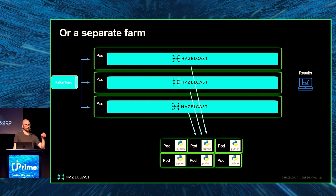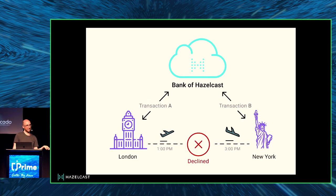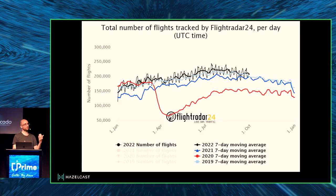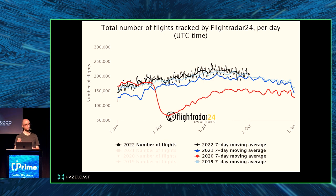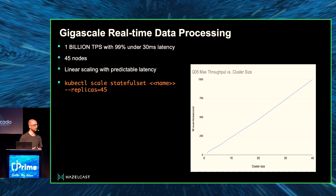Consider one credit card: if I swipe it here and in Germany two hours later, it should be accepted. But if the next use is in New York with no two-hour window, it should be rejected. To scale this: we're talking about 250,000 flights per week, multiplied by number of passengers, multiplied by number of credit cards. Using Kubernetes, we managed to run 1 billion transactions per second at around 25 milliseconds latency on just 45 nodes.